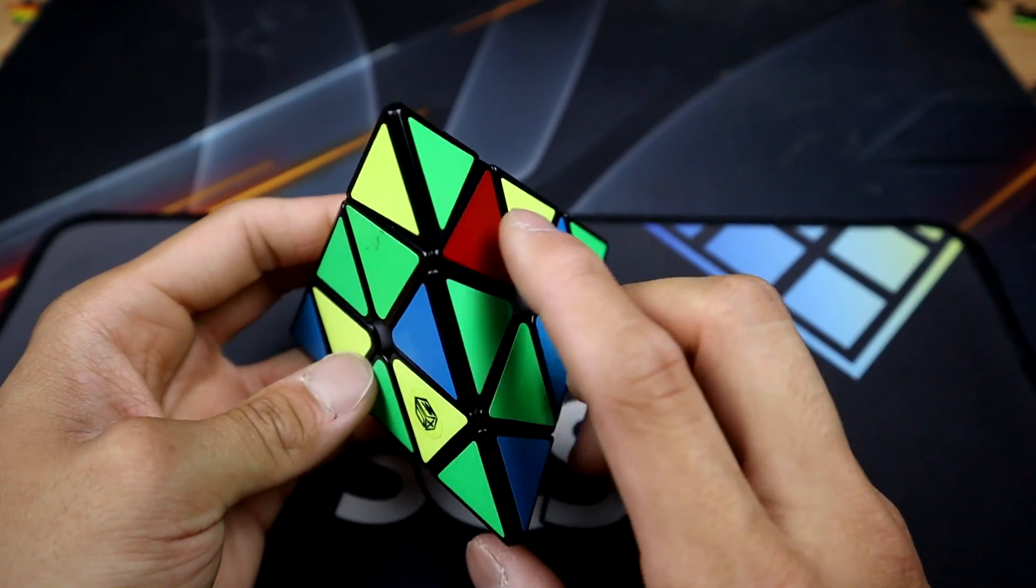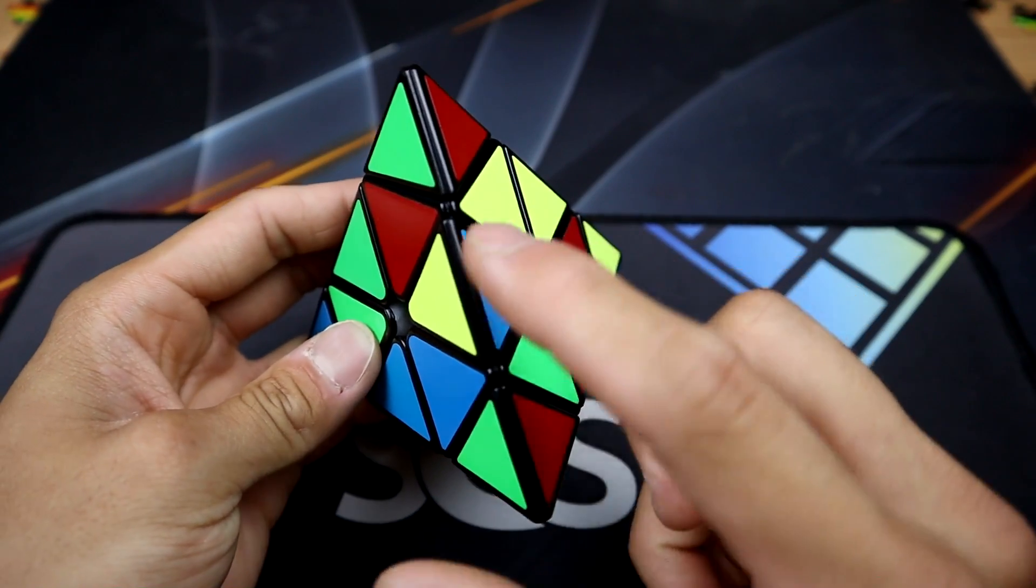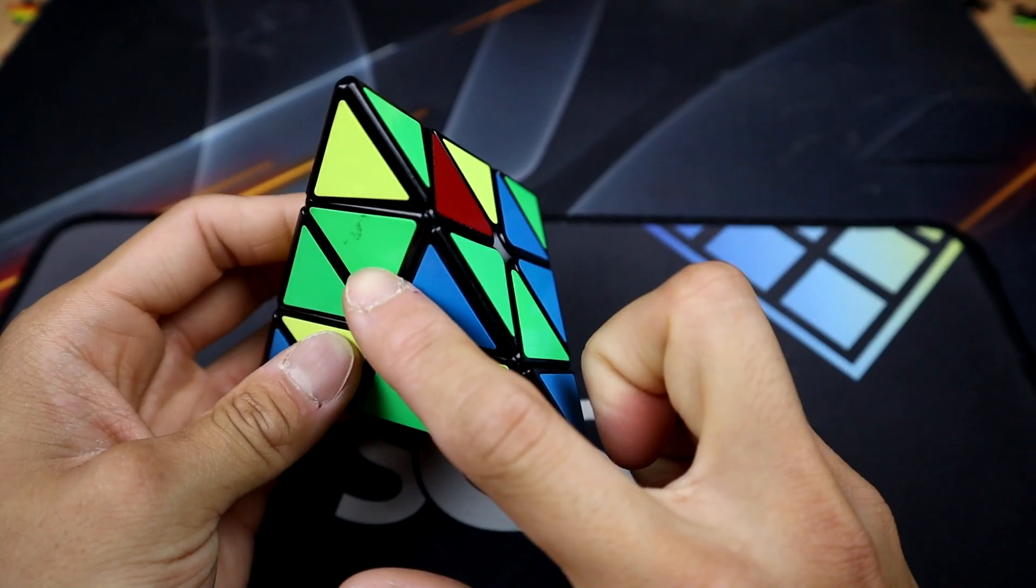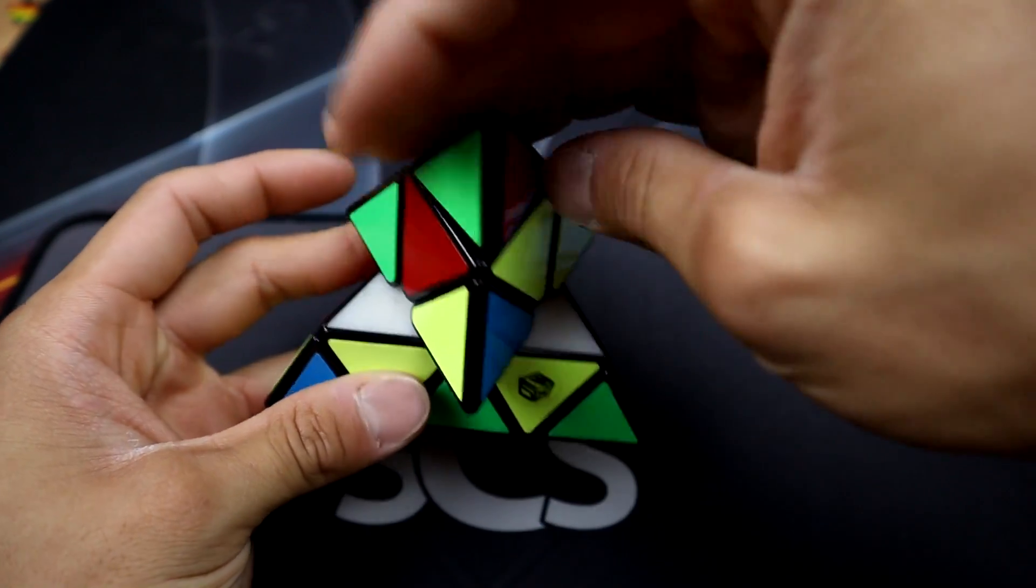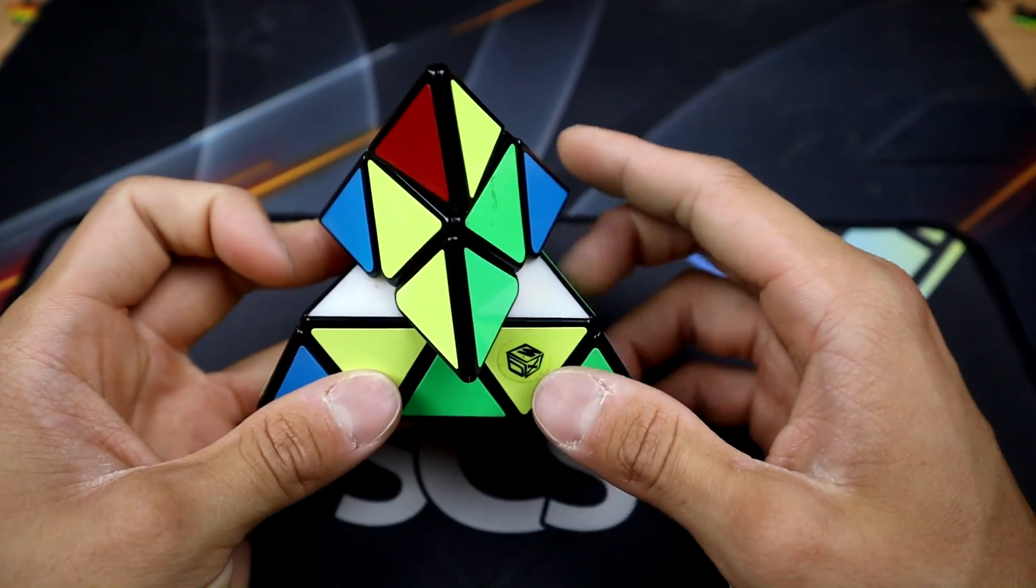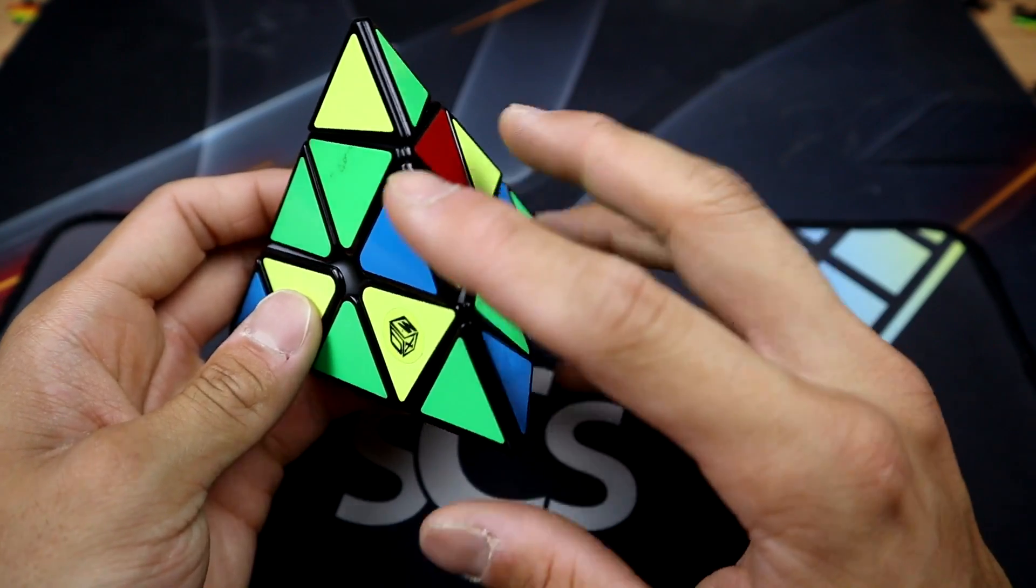Now we need to solve one more. We can either solve the green or red edge right here that goes in this slot, or we can solve the red-yellow edge that goes in this slot. Let's go ahead and solve this green-red edge. So this will be our tip layer. This will be our top face just for the sake of learning this, but you can solve it however you like after that.